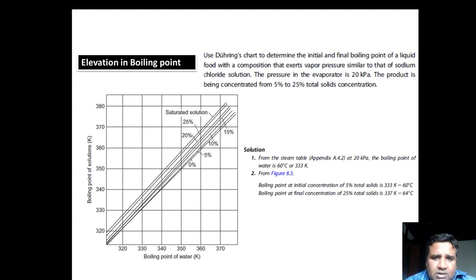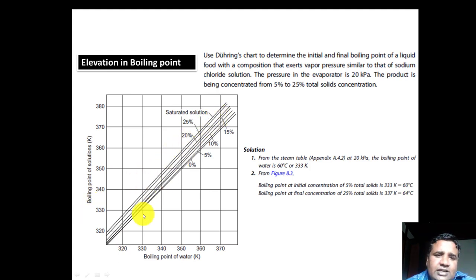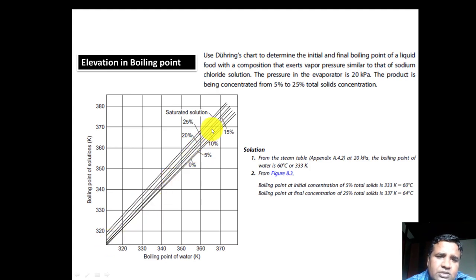To show the impact of solute concentrations on boiling point elevation, there is a particular chart known as the Dühring chart. On this chart the x-axis shows the boiling point of water and the y-axis shows the boiling point of the solution. There is a linear relationship. The lines represent different concentrations: 0 percent, 5 percent, 10 percent, 15 percent, 20 percent, and so on.